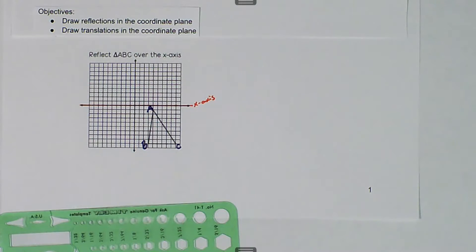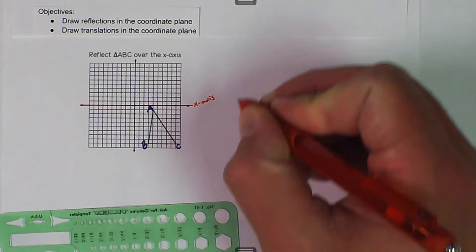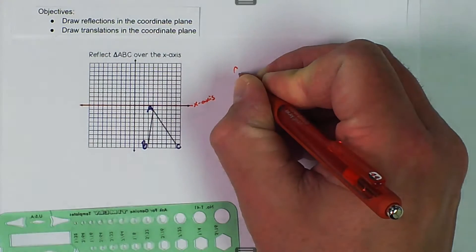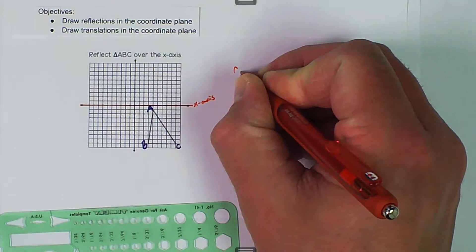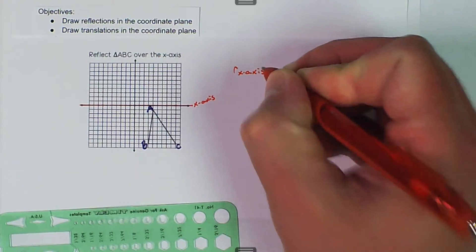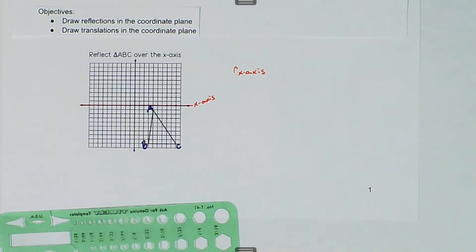The way that we could write that is a reflection over the x-axis — lowercase r, x-axis. Now basically all we really have to do is count.